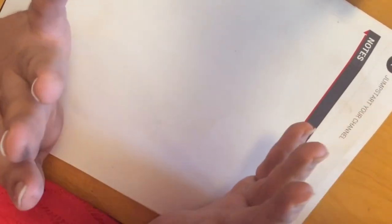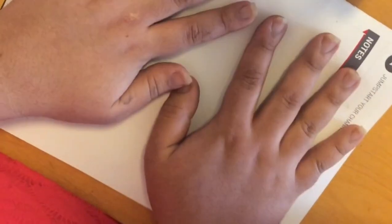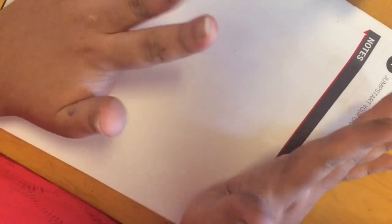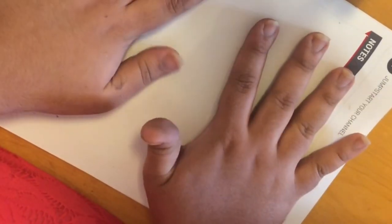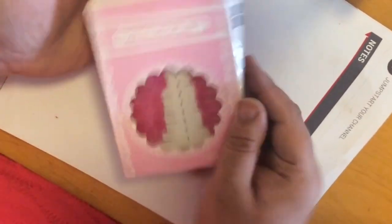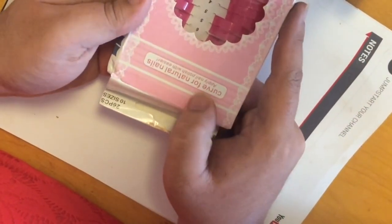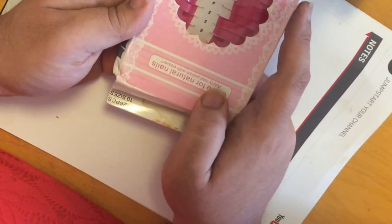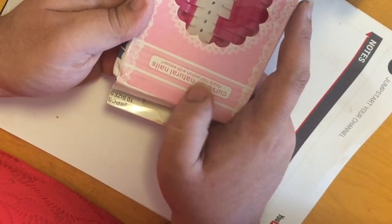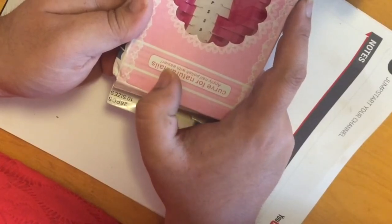I have a struggle with painting my nails perfect. I get it all over the place. So I got this thing from Amazon and it's called curve for natural nails, applying nail polish with easier.